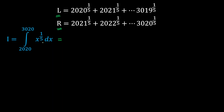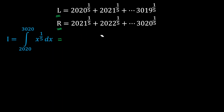I can easily calculate the integral, but it is very difficult to compare that single number with L and R because L and R are given as series, not single numbers. So rather than calculating I directly, I am going to rewrite I as a sum of fifth root terms, which will make comparison easier.